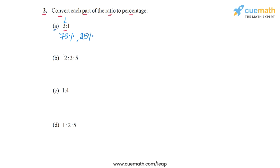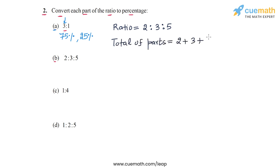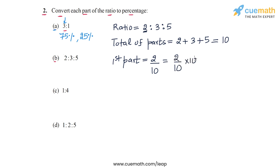Now we go to part B, in which we have the ratio 2 is to 3 is to 5. The total of the parts will be 2 plus 3 plus 5, which equals 10. Now let's calculate each part as a fraction of the whole and then as a percentage. The first part corresponds to 2, so as a fraction it is 2 by 10. As a percentage: 2 by 10 into 100 — 100 by 10 is 10, and 2 into 10 is 20. So the first part is 20%.